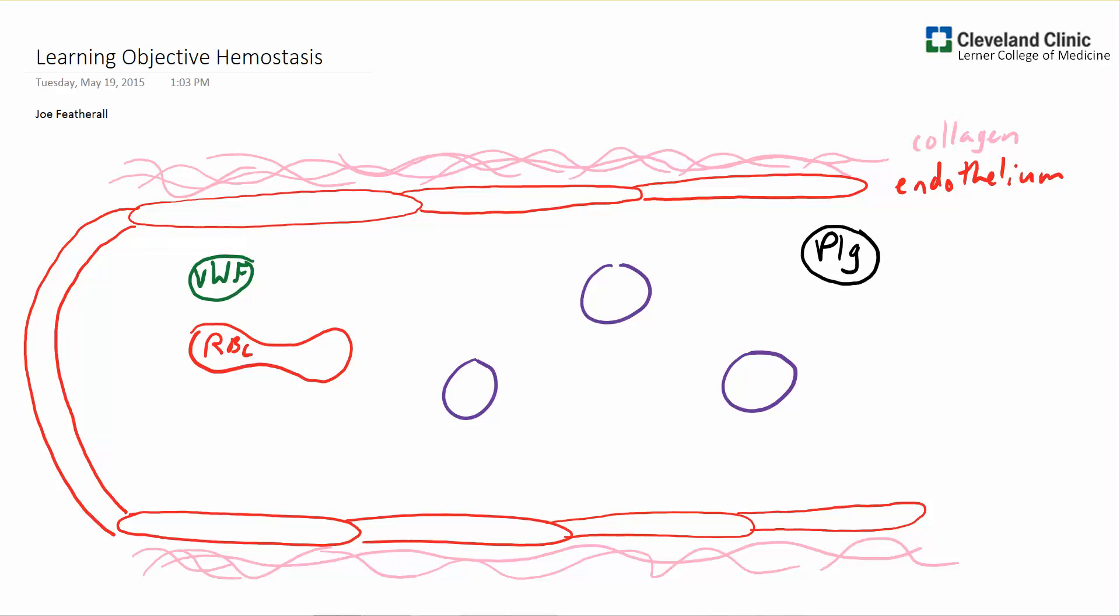Platelets carry granules. The dense granules carry ADP, and the alpha granules carrying von Willebrand factor.